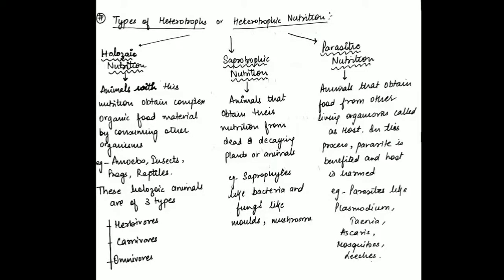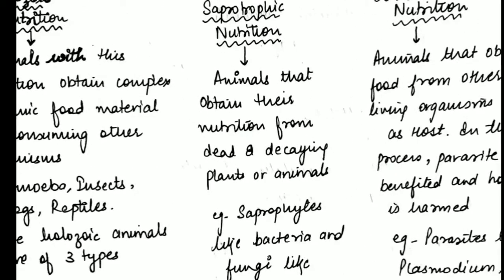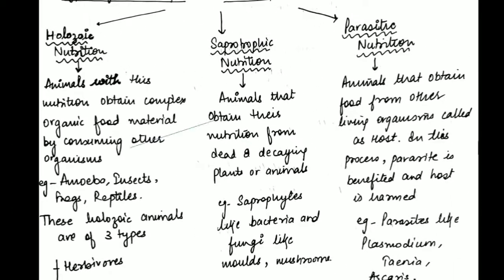In heterotrophic nutrition we will study three types of nutrition. The first type is holozoic nutrition.